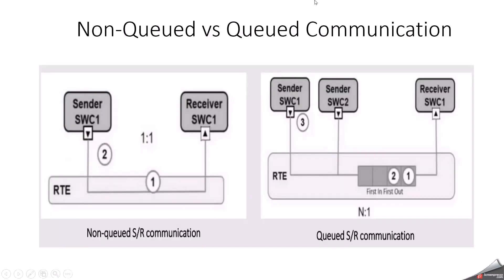You can see this picture. This is a non-queued sender receiver communication — no queue will be maintained here, so whenever the latest data is available, that will be received by the receiver. But in the queued communication, we will have a queue, but this will be configured specifically during your configuration. Based on your queue length, the queue will be formed. This is the way queued communication will get processed.